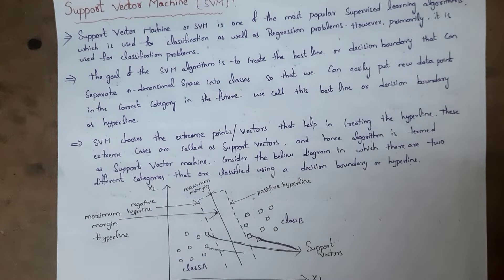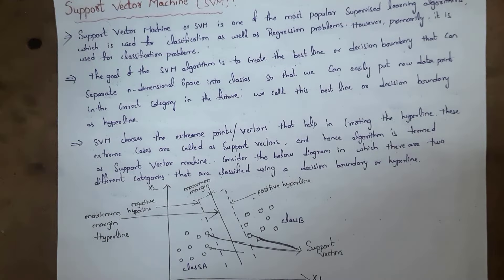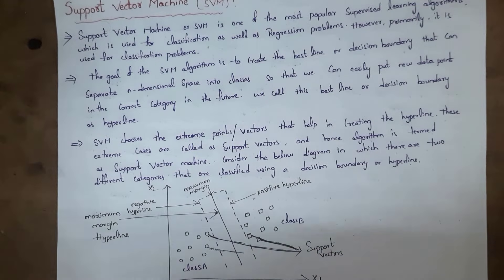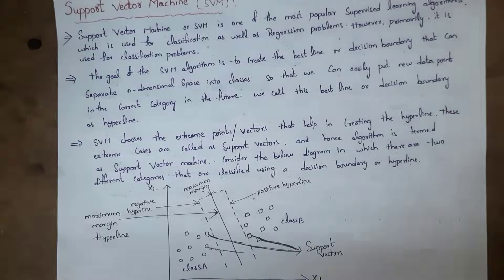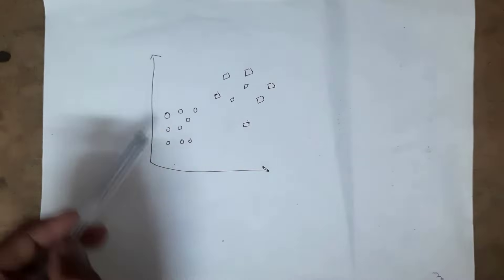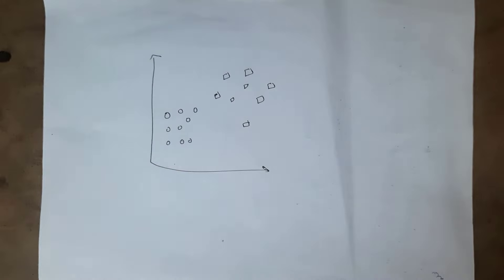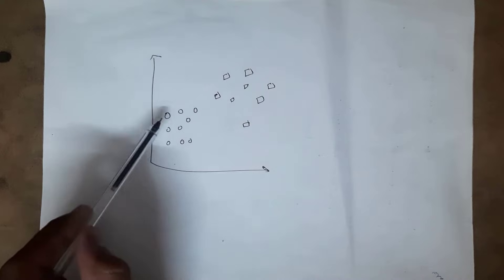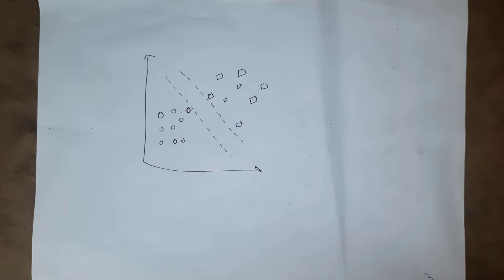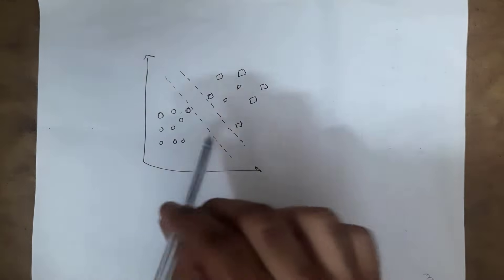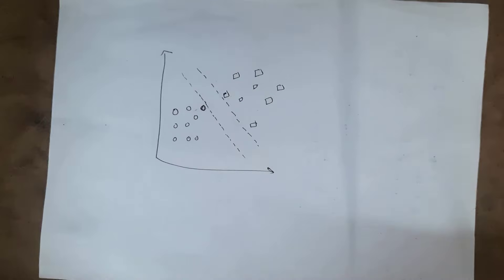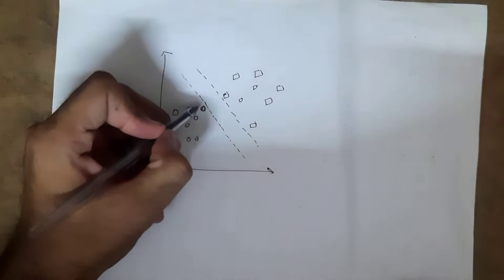This hyperplane will separate data into various classes so that whenever we receive new data, we can place it into one of these classes. In this example, there are two categories of data: one is in circular form and another is in square form. Now I want to divide this data into two classes using SVM. Among this data, the circle is closest, so SVM will generate one line.